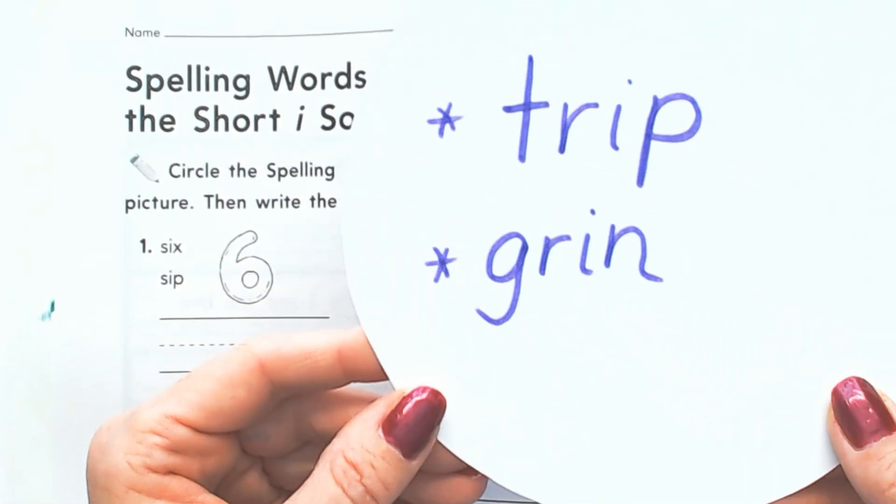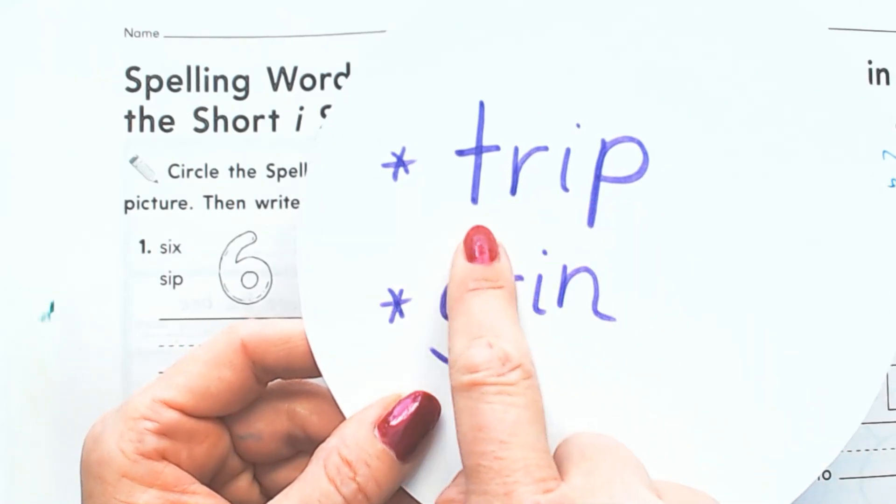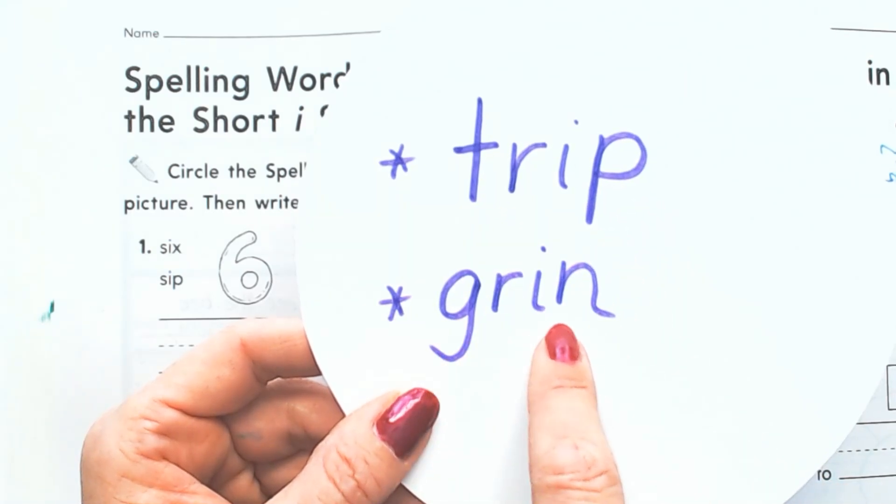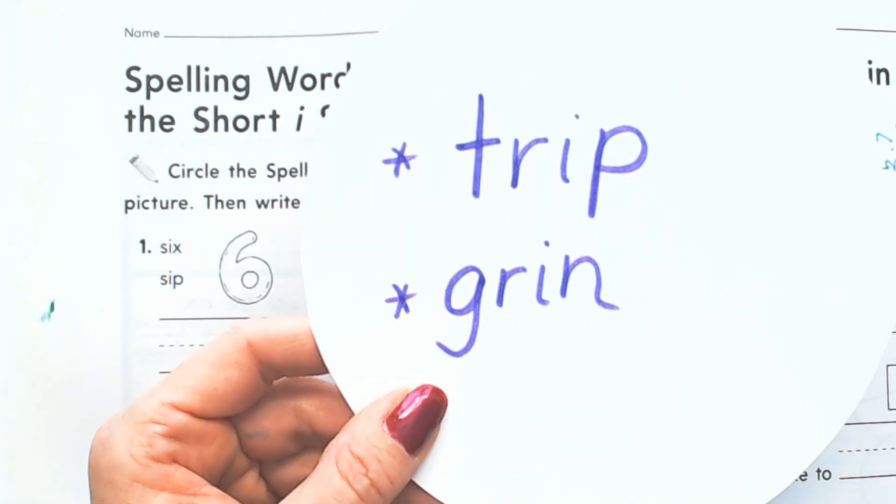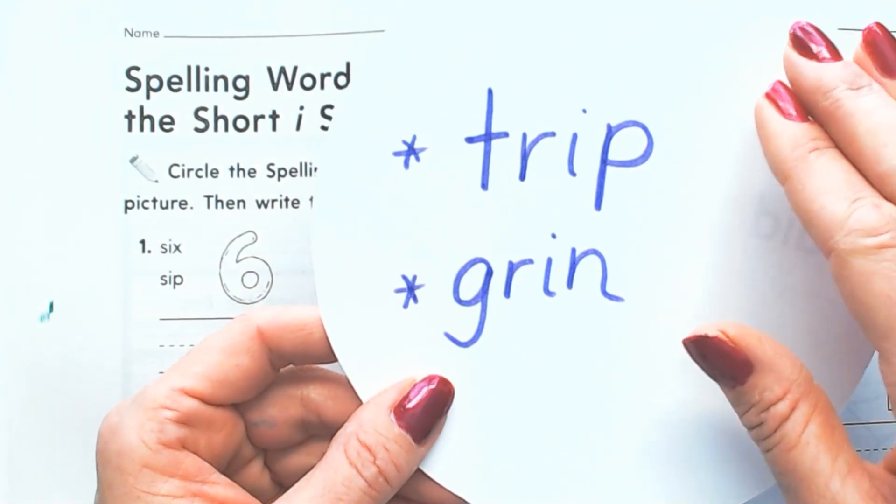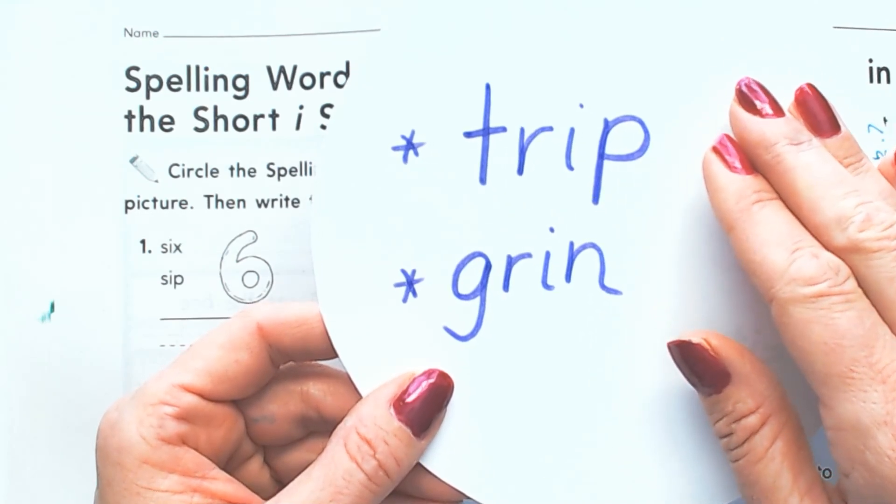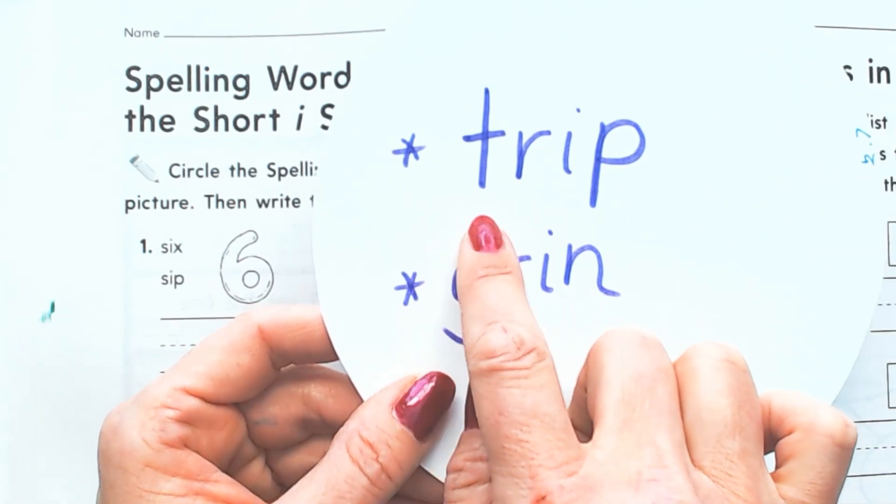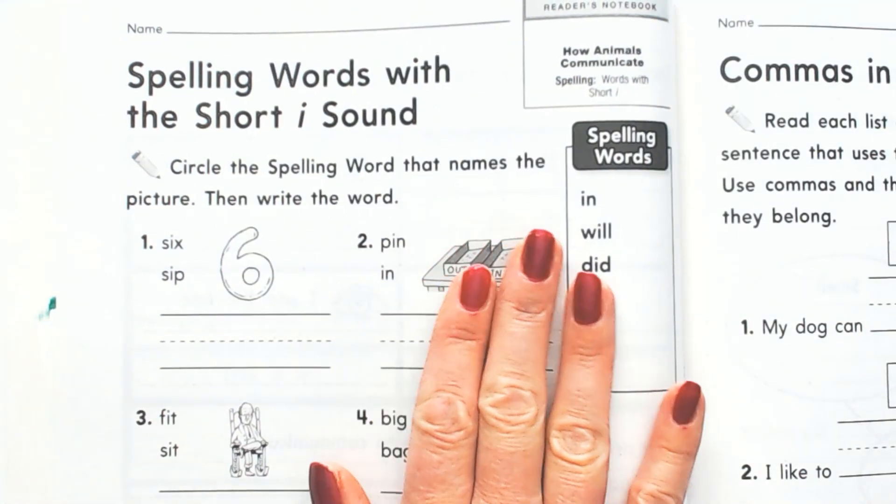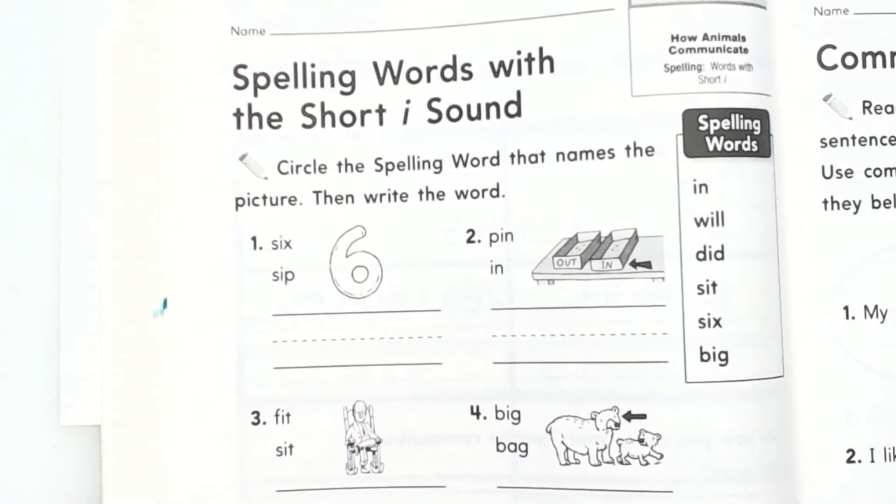These are two challenge words: 'trip' and 'grin.' I've had first graders a long time and these are challenge words. You will have to study how to spell 'trip' and 'grin.' It does not come naturally, you have to practice. We are going to practice our basic spelling words on this page.